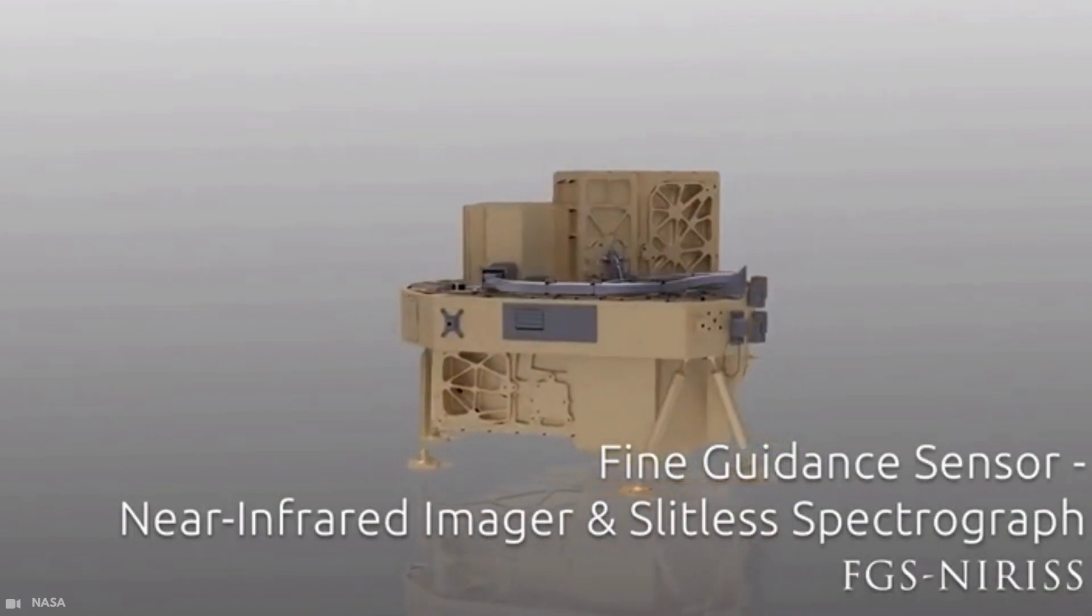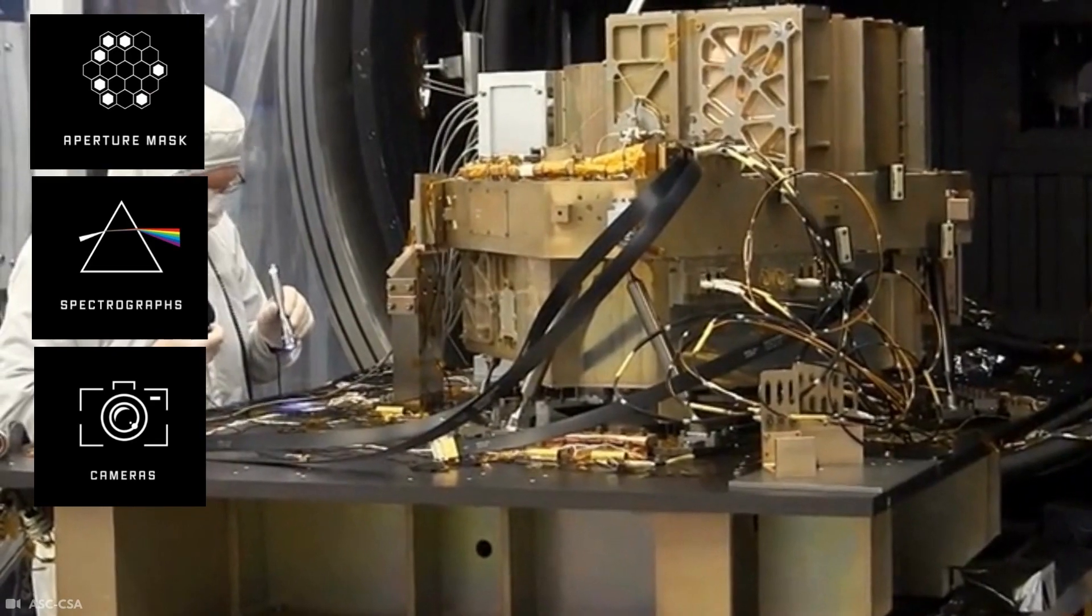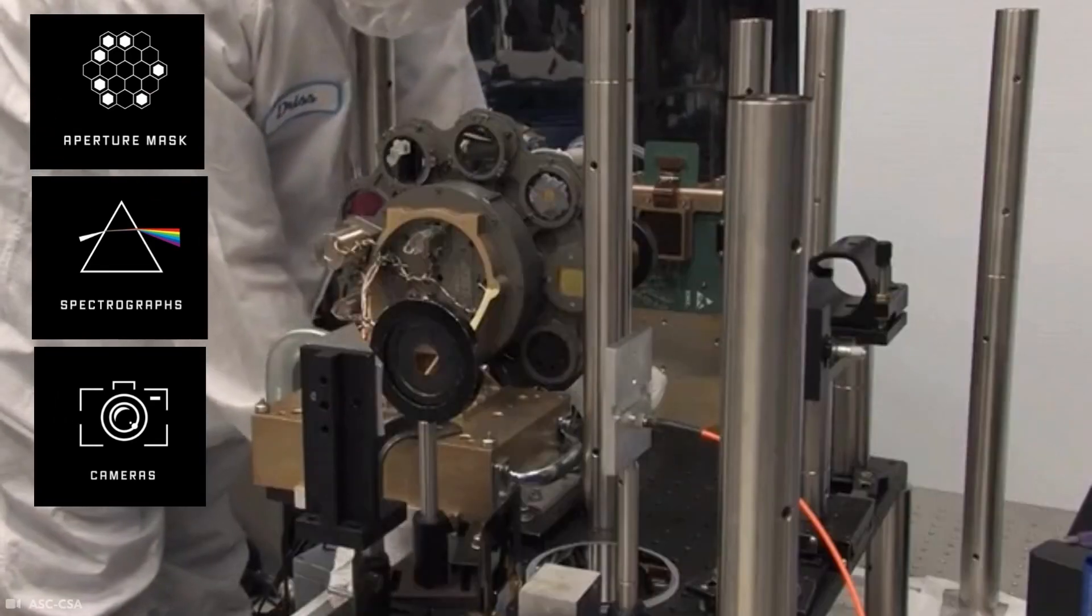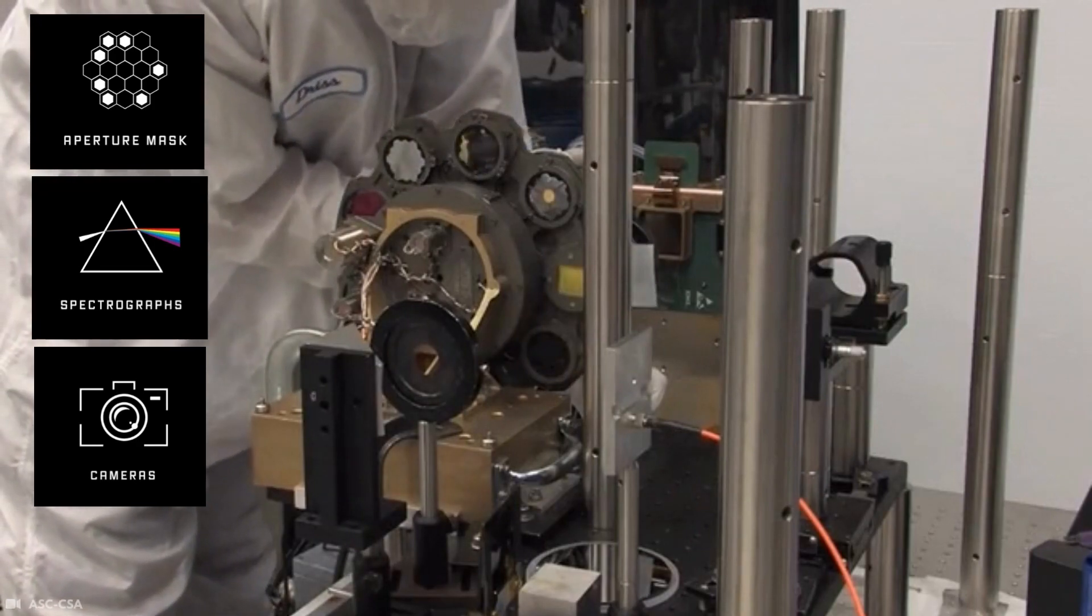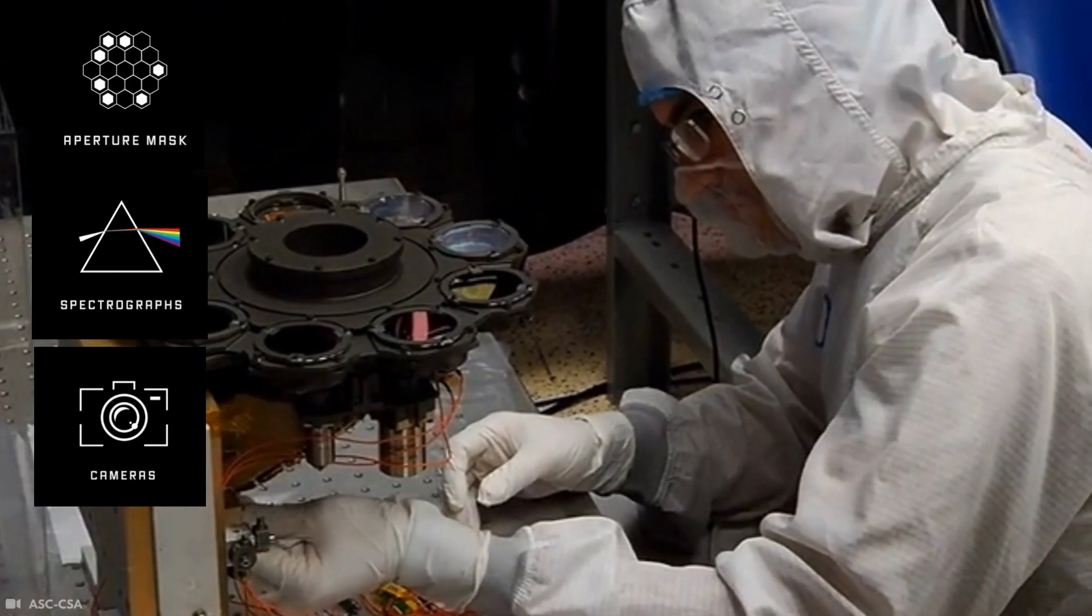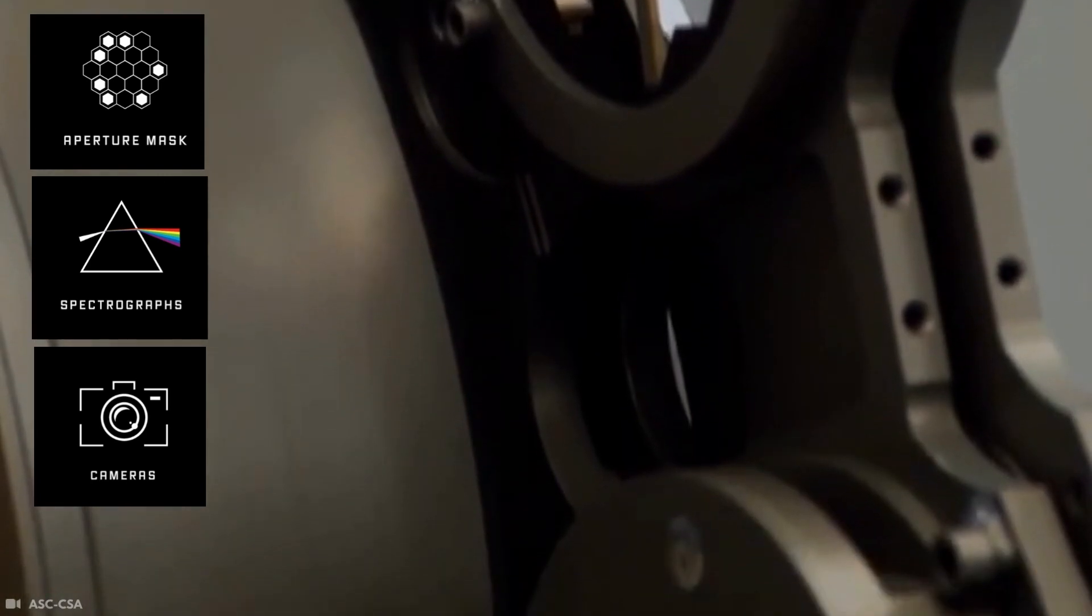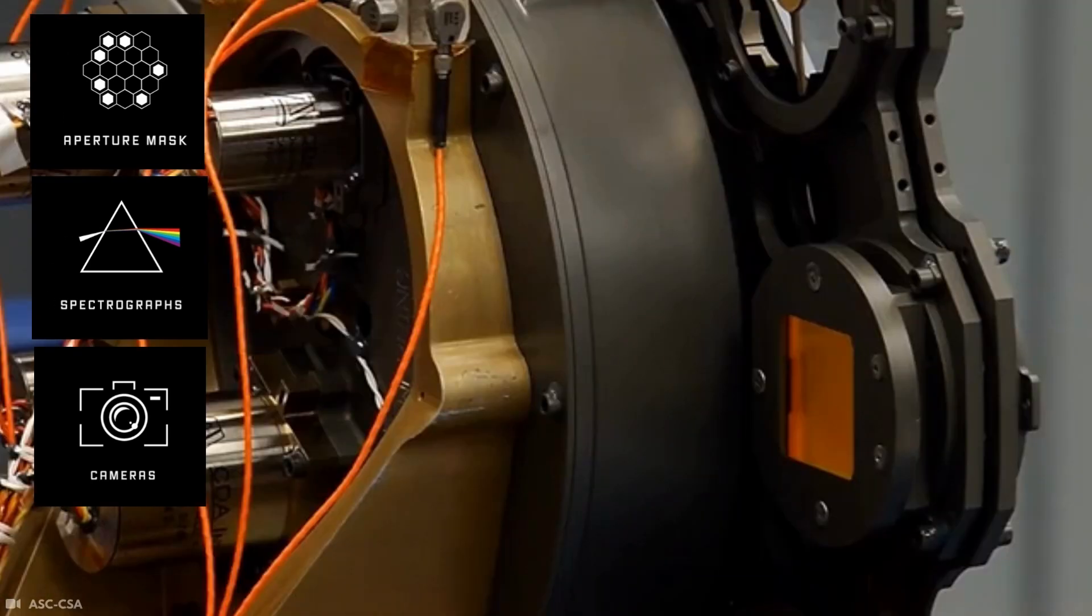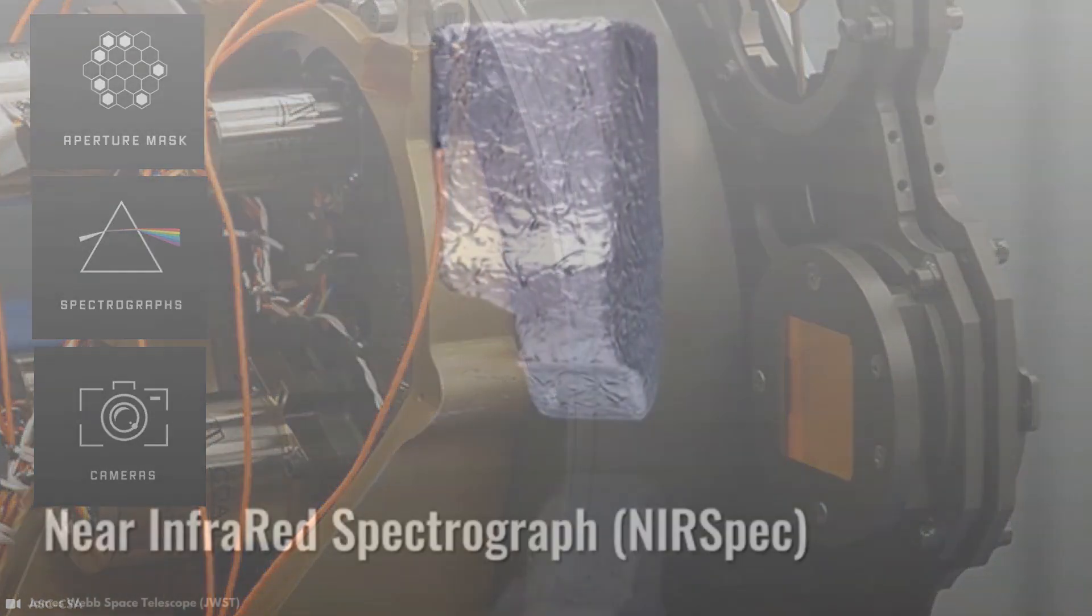The first instrument is the Fine Guidance Sensor. This instrument is a guide camera designed to point the telescope in the right direction. It is packaged with the near-infrared imager and slitless spectrograph. The instrument it is packaged with has a camera and a spectrograph for taking images and spectra in the near-infrared range.